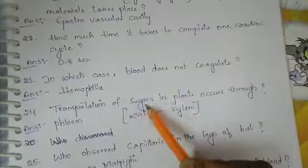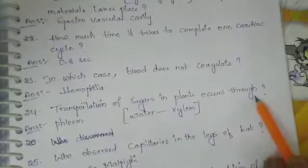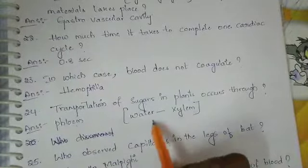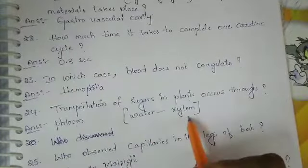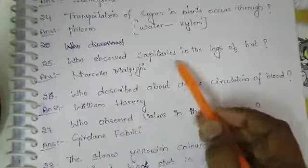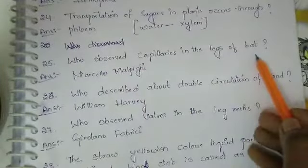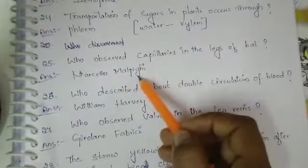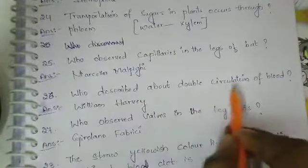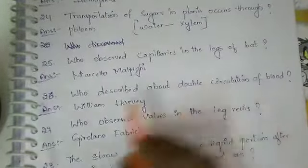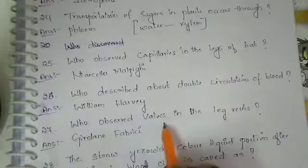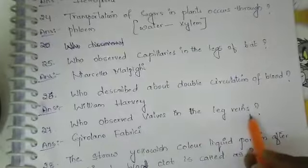Transportation of sugars in plants occurs through phloem. Transportation of water occurs through xylem. Who discovered capillaries? Marcello Malpighi. Who discovered double circulation of blood? William Harvey. Who observed valves in the leg veins?